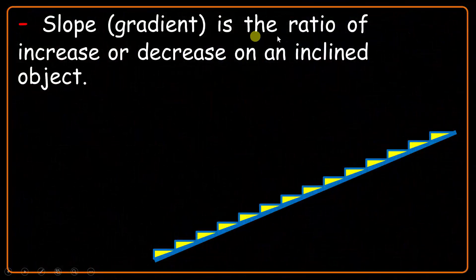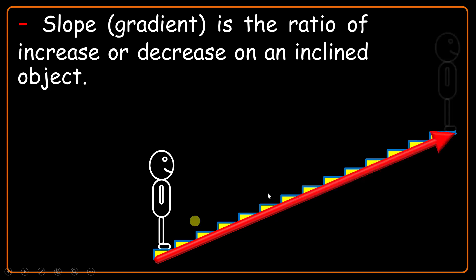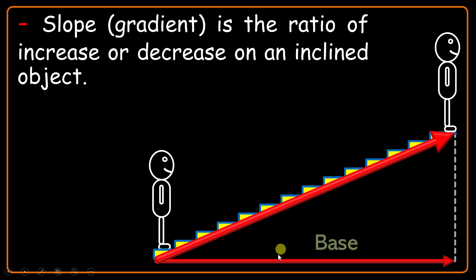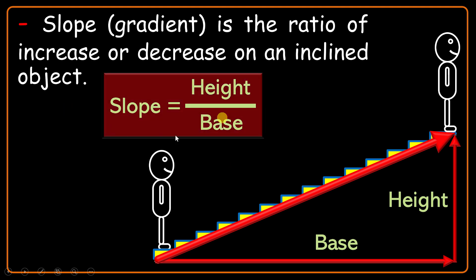Slope, or gradient, is the ratio of increase or decrease on an inclined object. Suppose that you are here and you are going upstairs. Your real displacement is indicated by this red arrow. But if I establish a right triangle, I see that this red arrow is the hypotenuse of this triangle. So I have two hidden displacements — one is the base in the horizontal direction, and the other is the vertical one, which is named height. The ratio of height over base is defined as slope.